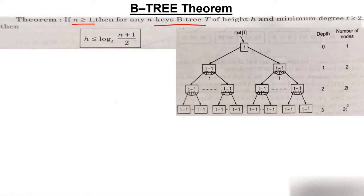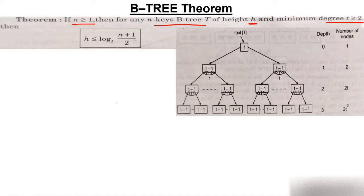Given that n is greater than 1, for an n-key B-tree of height h with minimum degree t greater than or equal to 2 — as explained in the introduction, minimum degree is represented by t — you have to prove that h is less than or equal to log base t of (n+1)/2. Now we look at how to prove this.